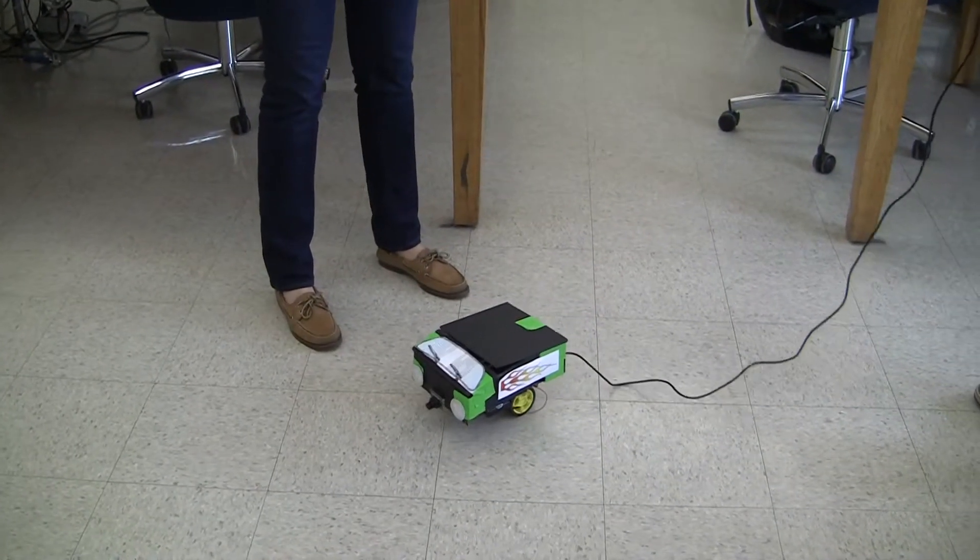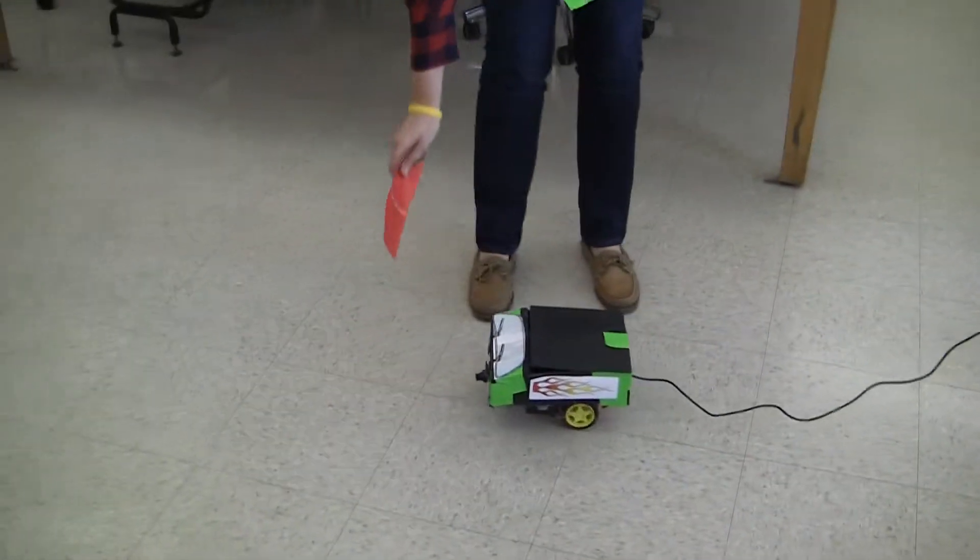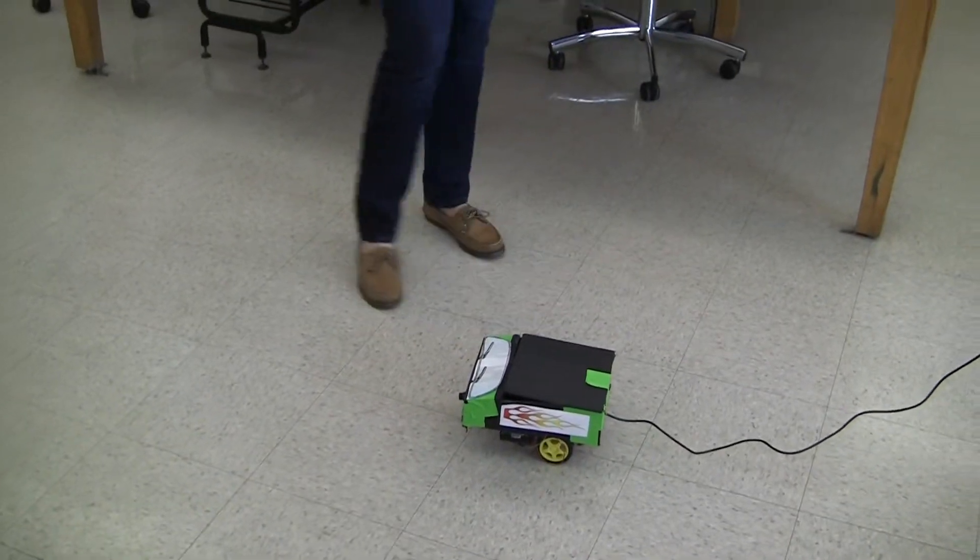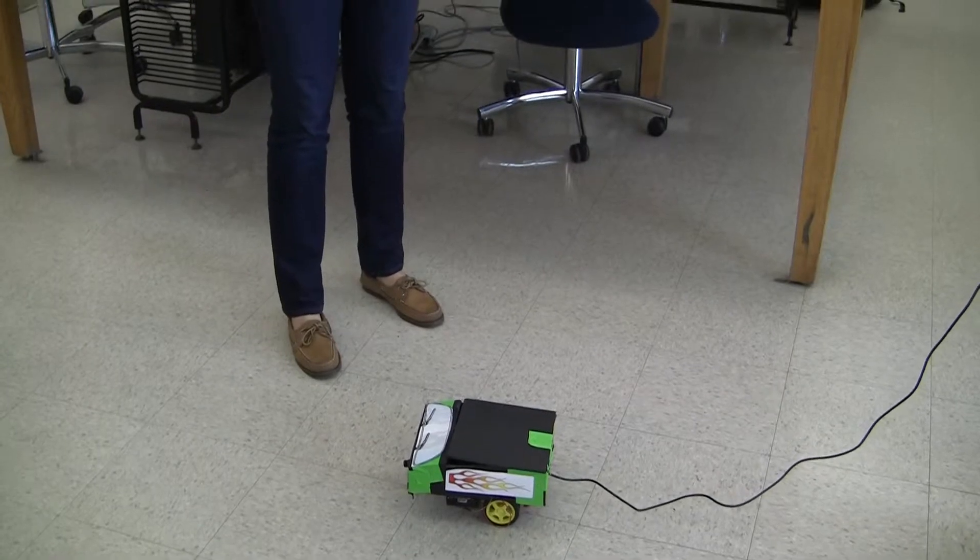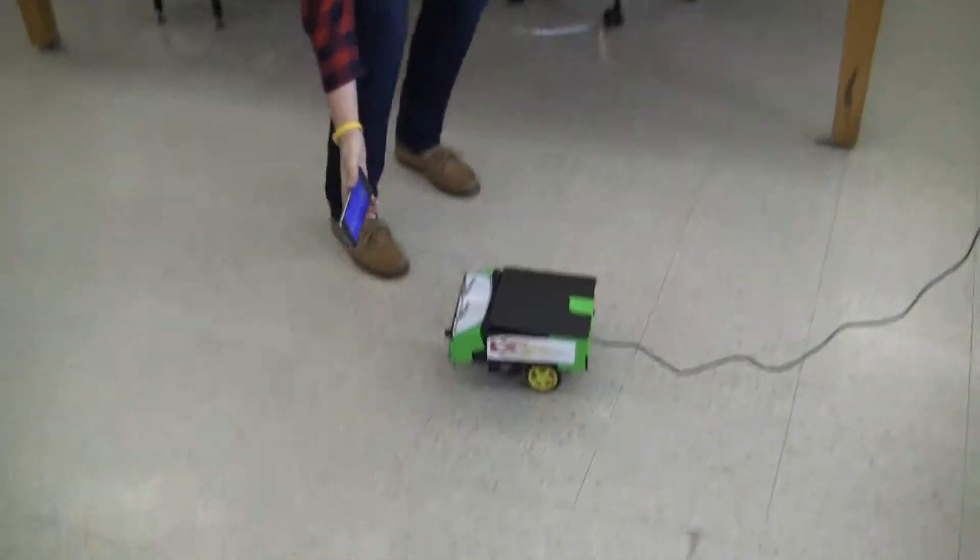So when it sees green it turns left and then it'll continue forward. Red will stop it and blue will turn it to the right.